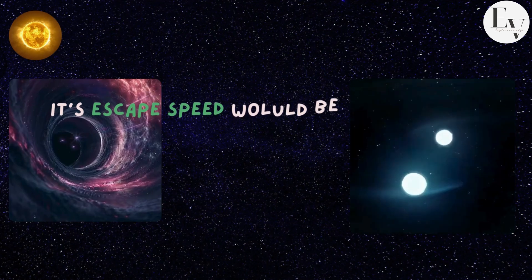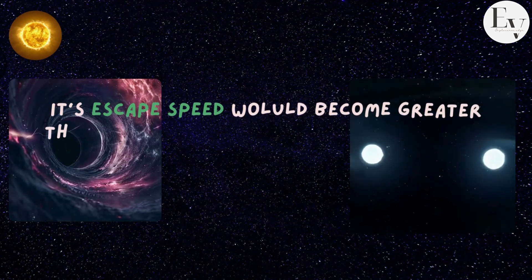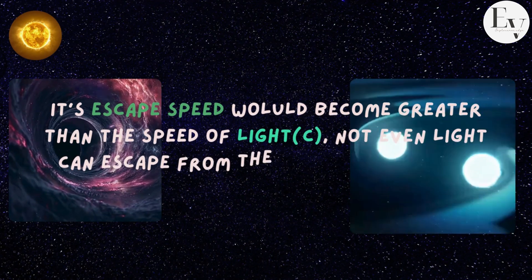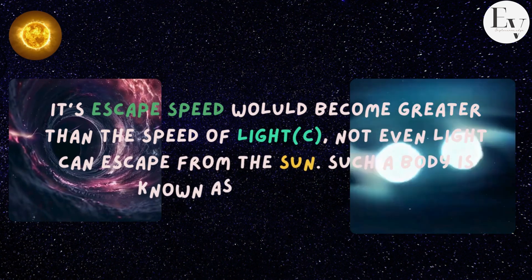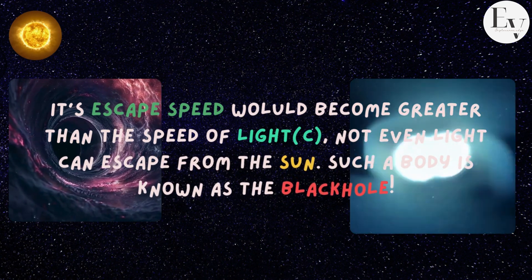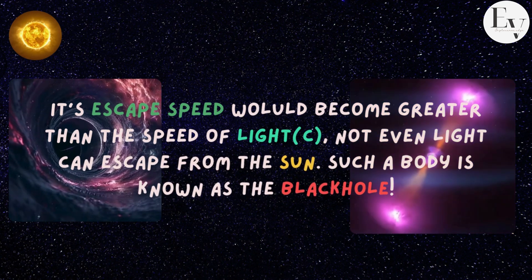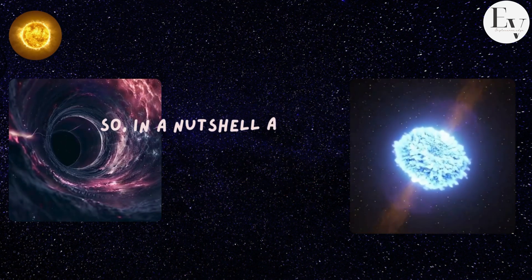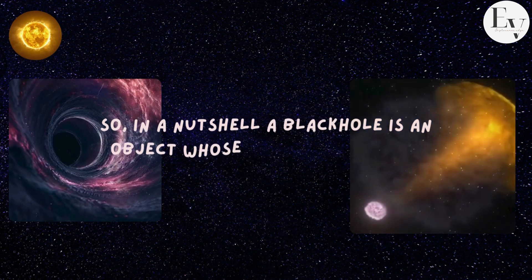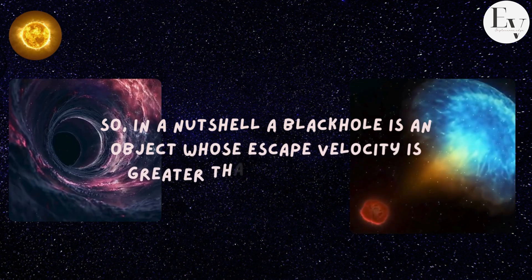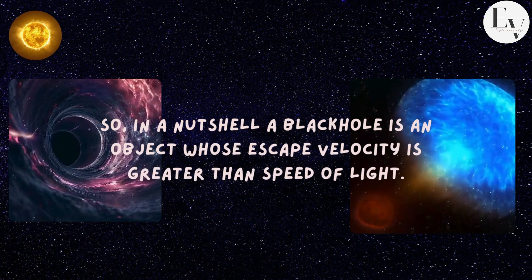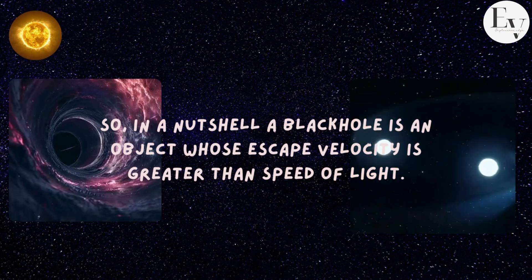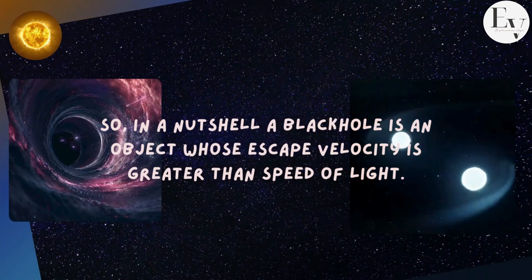In that case, its escape speed would become greater than the speed of light, and not even light could escape from it. Such a body is known as a black hole. So in a nutshell, a black hole is an object whose escape velocity is greater than the speed of light.